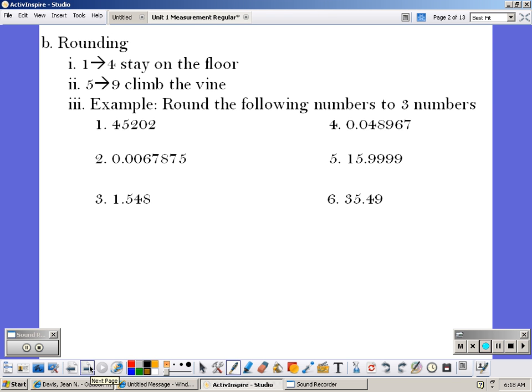Rounding. We're going to practice rounding so that we're all on the same page. If the number following it is one through four, then we're going to leave it alone. If it's five or higher, we're going to round it up. For example, round the following numbers to three numbers.